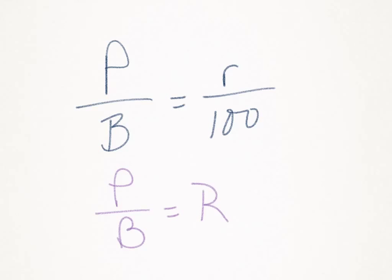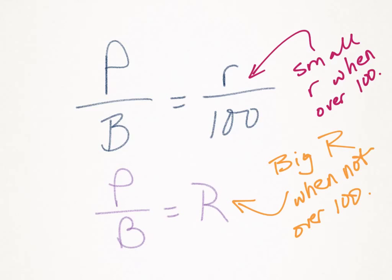But sometimes when you're solving an equation, they may give you the percent. And if they give you the percent, you want to use this equation, because you can fill in the percent here, and then either solve for the percentage or the base. And this is just a reminder, you use a small r when over 100, and a big R when it is not over 100.